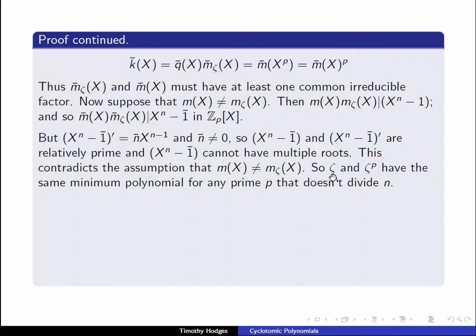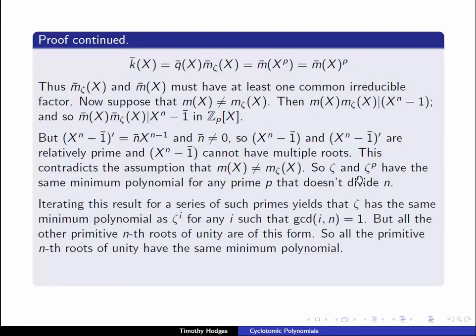So what have we shown? We've shown that if zeta is a primitive nth root of unity and p is a prime that doesn't divide n, then zeta and zeta to the p have the same minimum polynomial. By successively raising zeta to different prime powers, we can continue this process to conclude that for any zeta to the i, where i is relatively prime to n, zeta and zeta to the i have the same minimum polynomial. In other words, we can extend the previous result to conclude that all the primitive nth roots of unity have the same minimum polynomial.